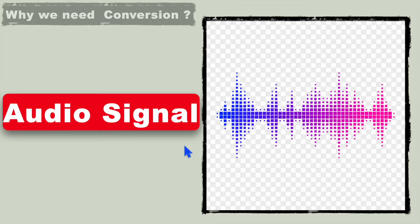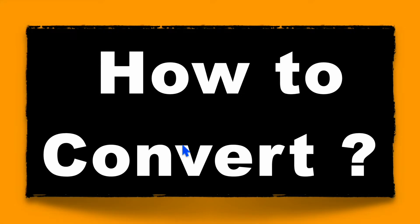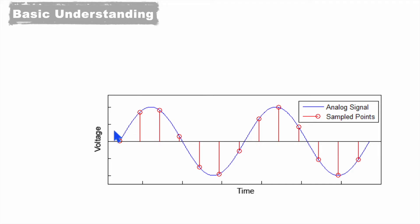Now let's understand how we can convert from an analog signal to a digital signal. To capture the different levels of an analog signal, we take samples, and these samples can be stored in binary form to track the analog signal. The points where we take samples are called sample points. How well we track this analog signal depends on how frequently we take samples. Since here we are taking samples at very low frequency, if we draw a straight line we will not be able to exactly track this analog signal.